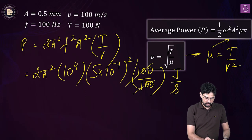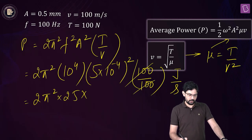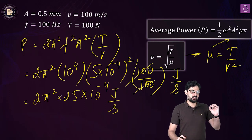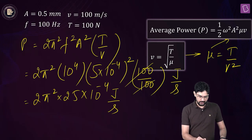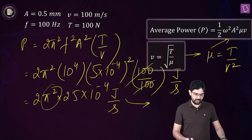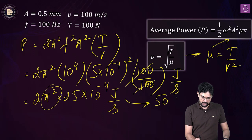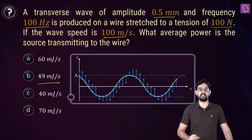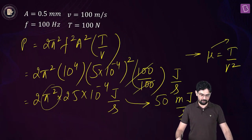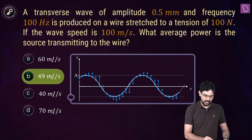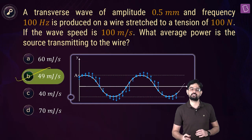100 and 100 cancel, giving 2 pi squared into 25 into 10 to the power minus 8 into 10 to the power 4, which is 10 to the power minus 4 joule per second. Approximating pi squared as 10, this gives 25 into 2, that is 50 into 10, so 500 into 10 to the power minus 4, or 50 millijoule per second. The closest option is 49 millijoule per second, so option B is the answer.